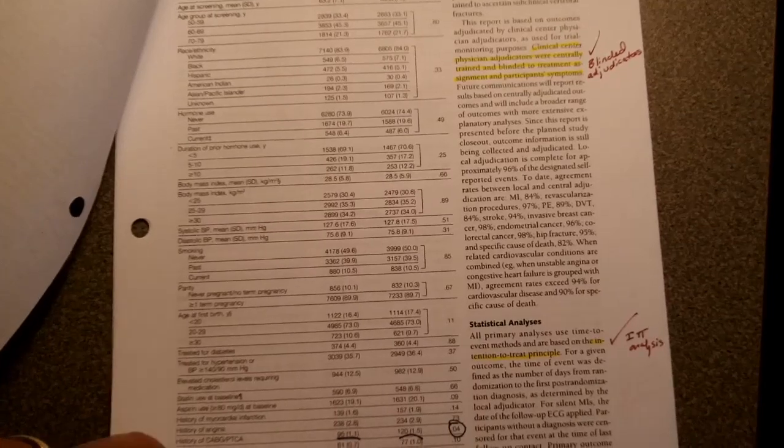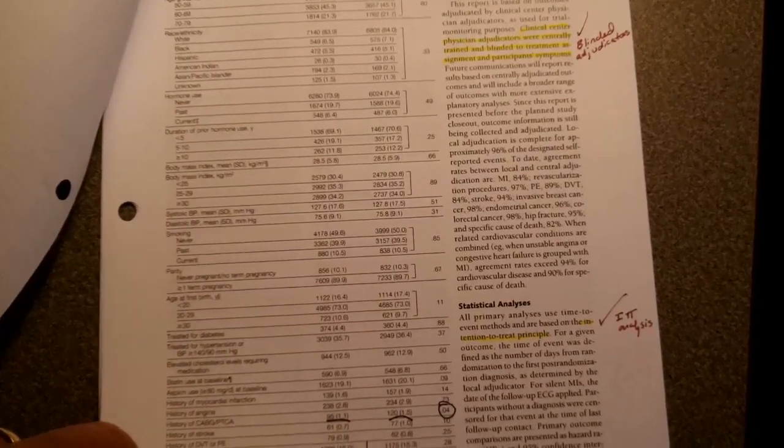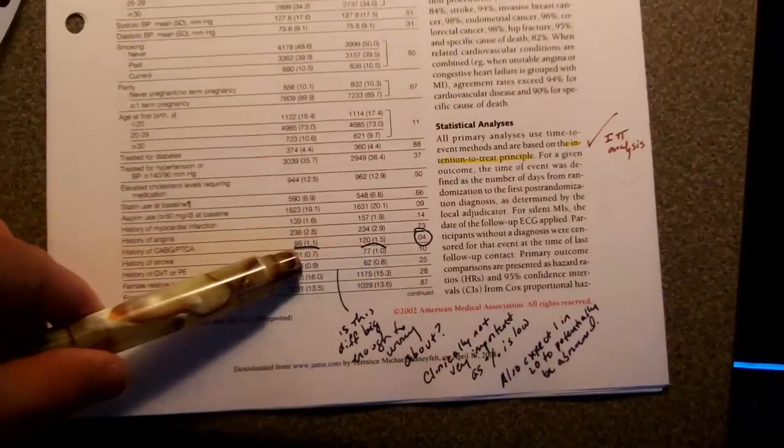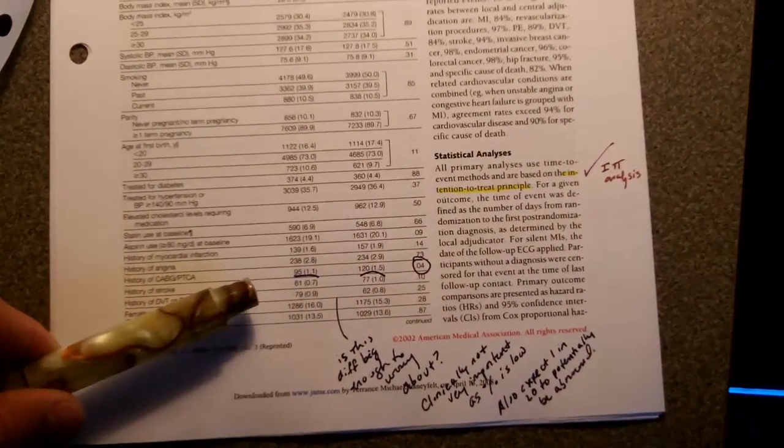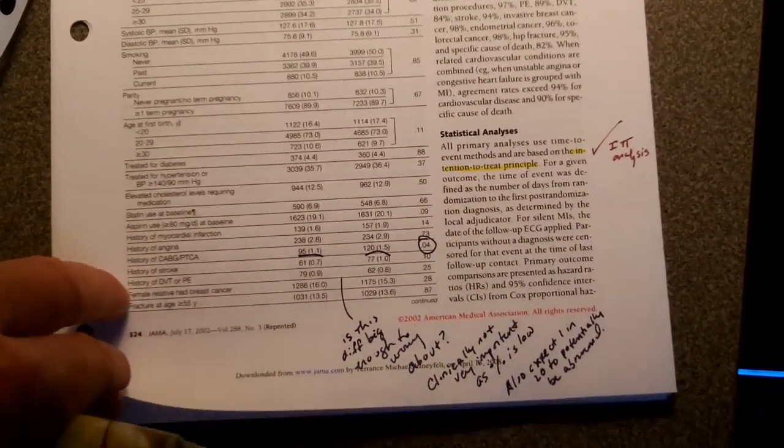Because the whole point of a study is to isolate the effect of some intervention and not have a lot of extraneous factors driving the results. Now, in this particular paper, there was a slight difference in one component between these two groups. And I made notes to myself about that and to think about that as I read the results.